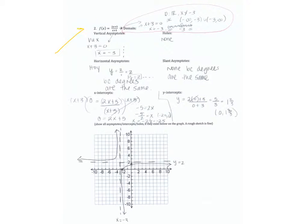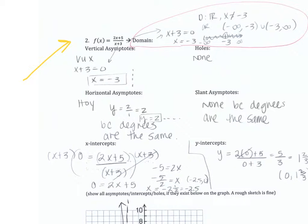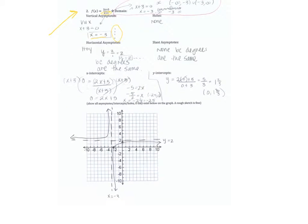For this next one, we always first search for the vertical asymptotes, and that helps us with domain, which I forgot to do on the first one. So we set the denominator equal to 0, we get x equals negative 3. No factors cancel, so we know it's going to be a vertical asymptote at x is negative 3, which we see right here.